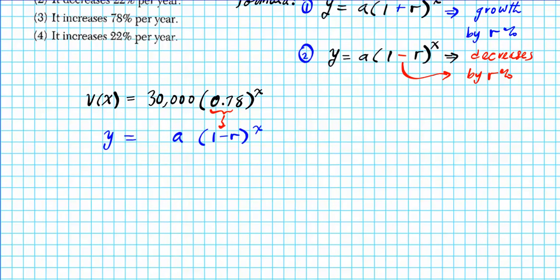So we want to find out what the rate it decreases by is. So we're going to set these two equal to each other. 0.78 = 1 - r. You can guess what it is. What do you subtract from 1 to get 0.78? It's 0.22. But let me just work it out for you. So subtract 1 from both sides, and then you're going to have -r = -0.22, and then you divide by -1, and that gives you your rate.